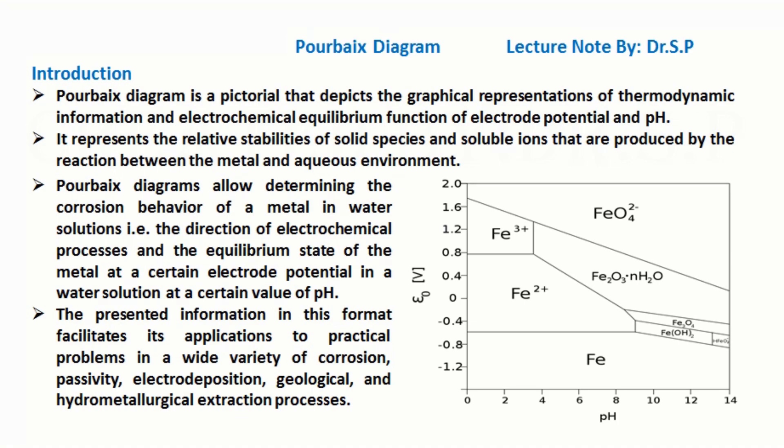Pourbaix Diagram Introduction. Pourbaix Diagram is a pictorial that depicts the graphical representations of thermodynamic information and electrochemical equilibrium function of electrode potential and pH.